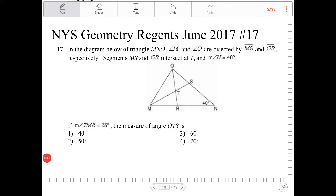In the diagram below of triangle MNO, angle M and angle O are bisected by MS and OR. So let's label that. M and O are bisected by MS and OR, so that means this angle over here is going to be congruent to this angle over here, and this angle over here is going to be congruent to that angle over there. Segments MS and OR intersect at T.